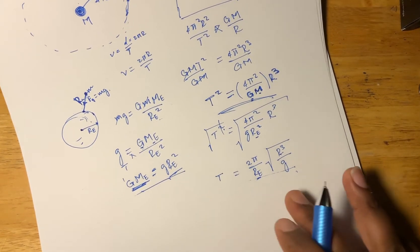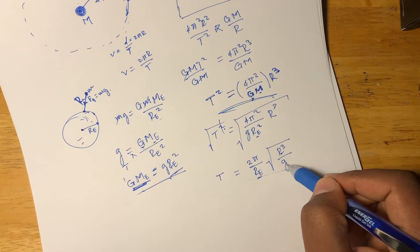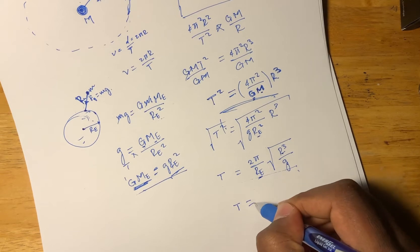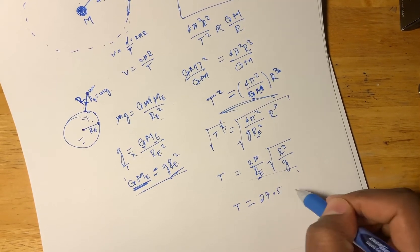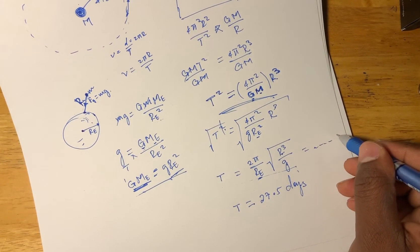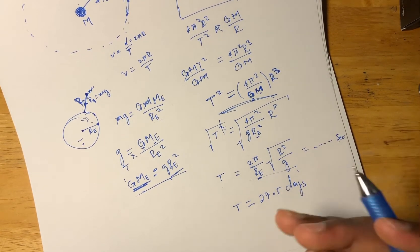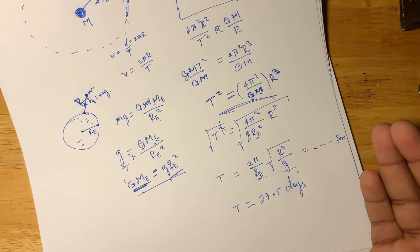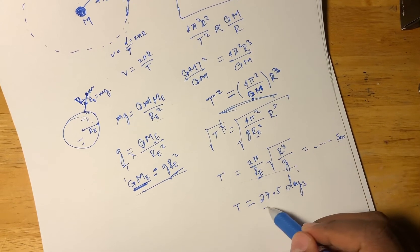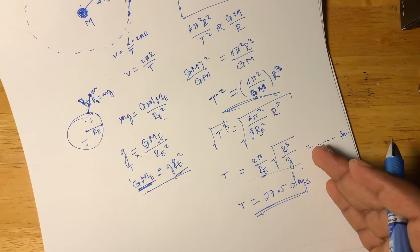For example, Newton plugged in the radius of the Earth and the acceleration due to gravity to calculate the time period of the Moon. It turns out it's going to be about 27.5 days — and that is indeed the period of the Moon.